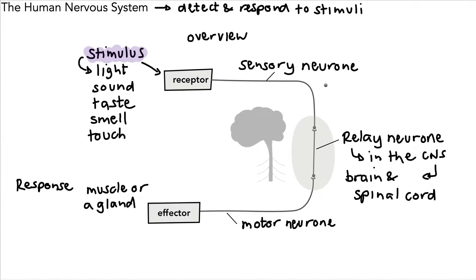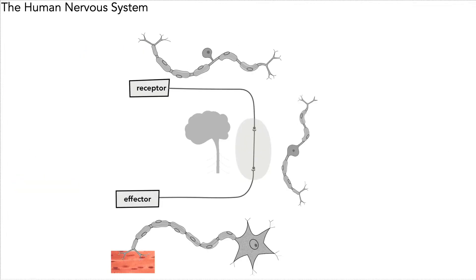So there's a stimulus. We get an impulse going all the way around to our effector and then we get our response. The response could be anything — you could see a light and look away from it, you could taste something, you could touch something and the response would be to move your hand. It's done through this nervous system like so.